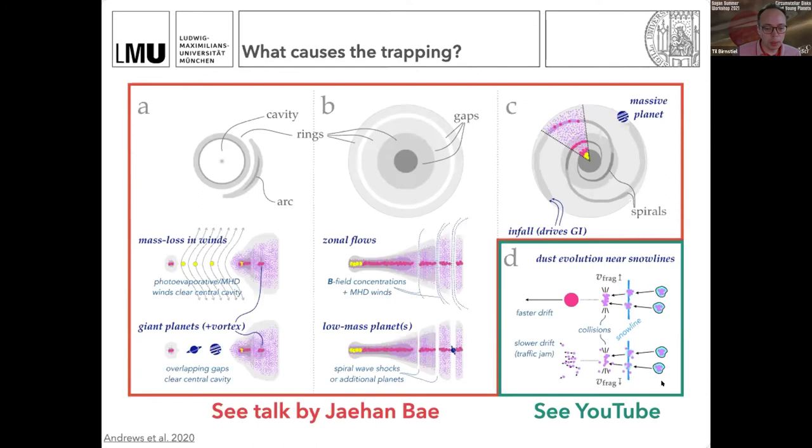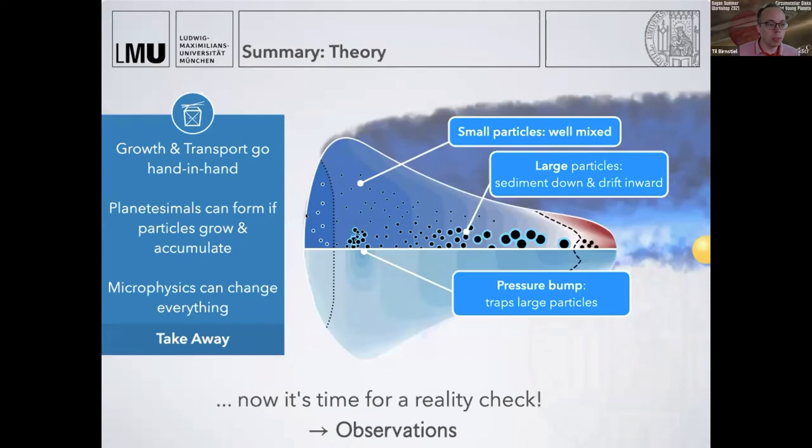The summary for the theory part is the following: dust growth and transport go hand in hand. They create this kind of picture, and planetesimals can form if the particles grow and are accumulated. Now, after all of this theory, in the last few minutes I want to turn to observations to basically check if this is all working.